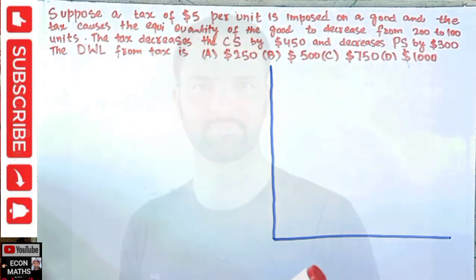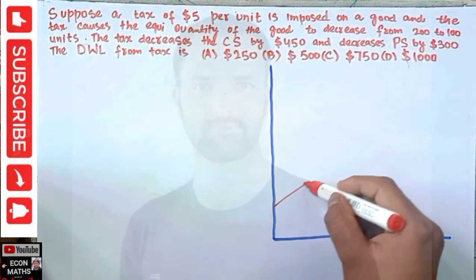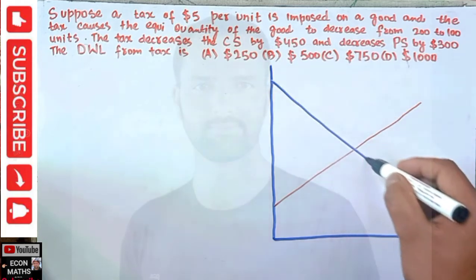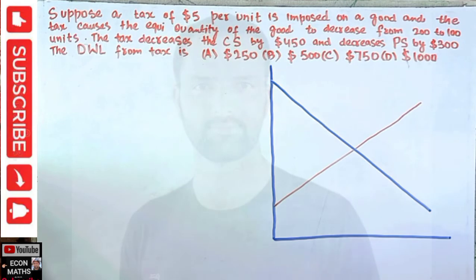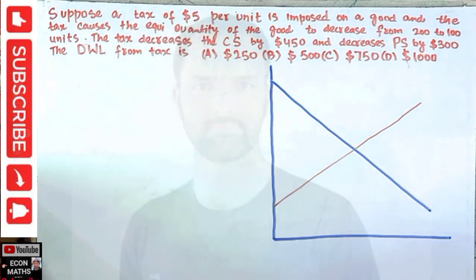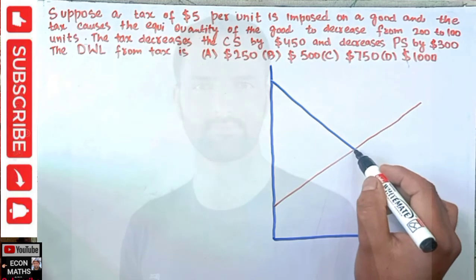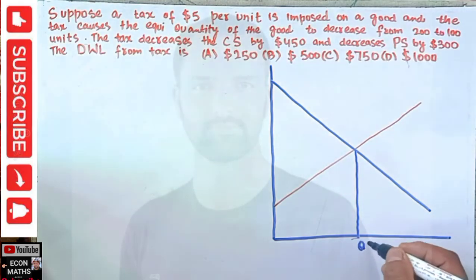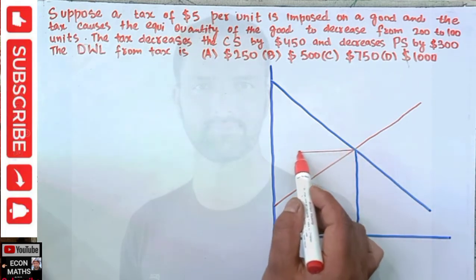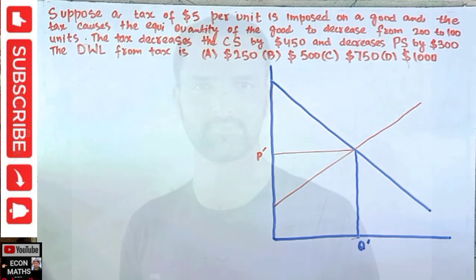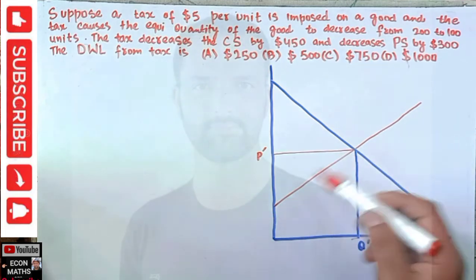Let us draw our demand and supply curves. This is our supply curve and this is our demand curve. Before the imposition of tax, our equilibrium quantity was Q* (Q-dash) and the equilibrium price was P-dash. So originally we have no economic inefficiency because the demand and supply curves intersect with each other.